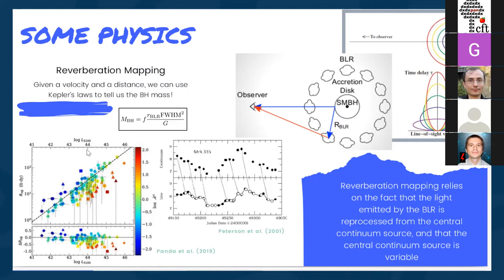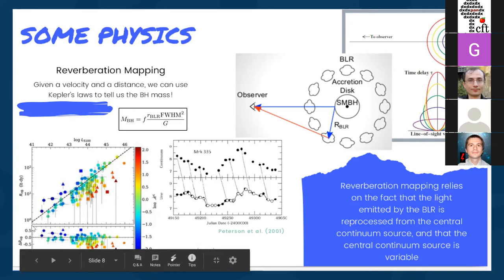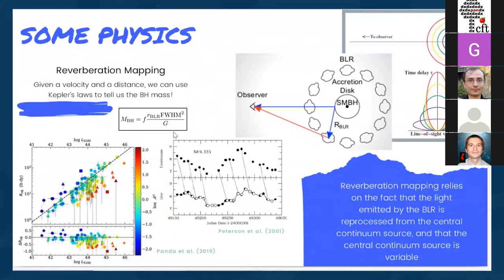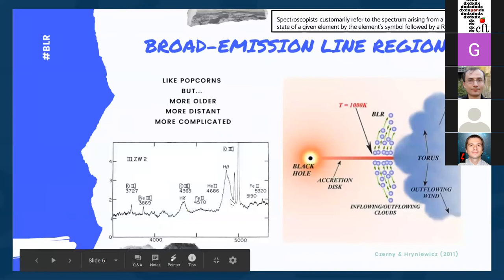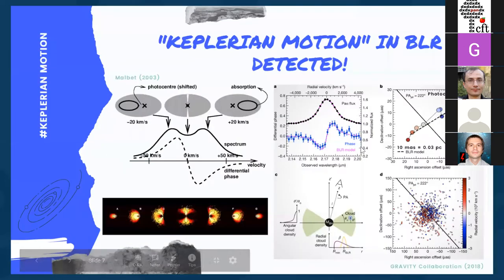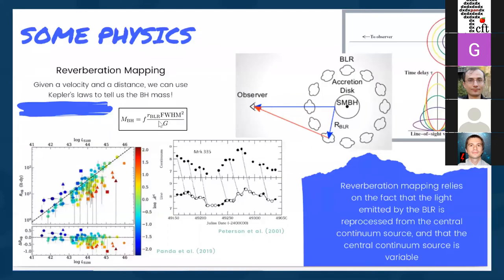About 120 sources have been studied using reverberation mapping in the H-beta regime, helping us build a scaling diagram of the radius-luminosity relation. The radius is the distance between the accretion disk and the broad line region cloud, and the luminosity is the monochromatic continuum luminosity at 5100 Angstroms. Combining the BLR size R_BLR with the full-width half-maximum — a proxy for velocity dispersion of the clouds — and plugging into the virial relation, one gets an estimate of the black hole mass.